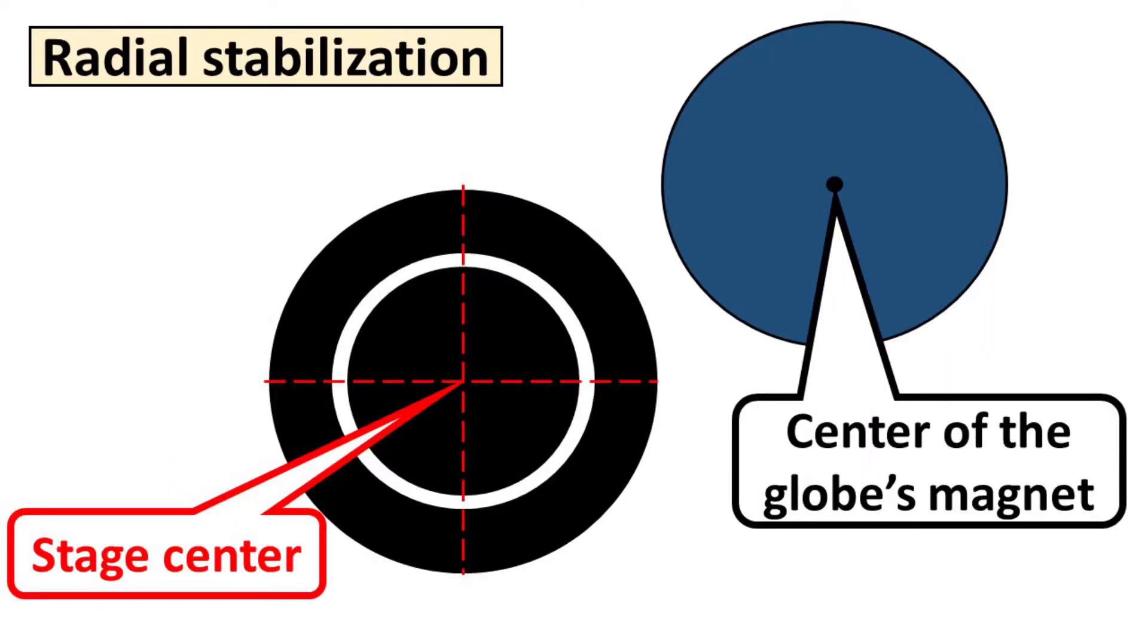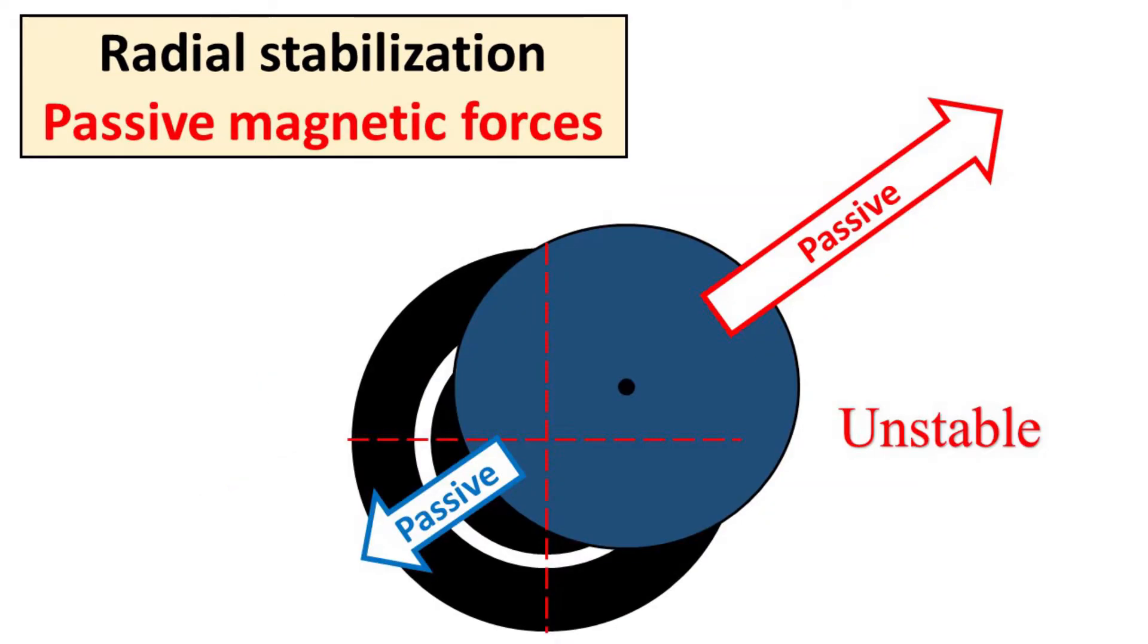However, this is not true for the horizontal plane. This black circle represents the magnetic stage. The blue circle represents the globe. When the globe is not aligned with the exact center point of the magnetic stage, passive attraction forces between the permanent magnets push it away from the balance position.